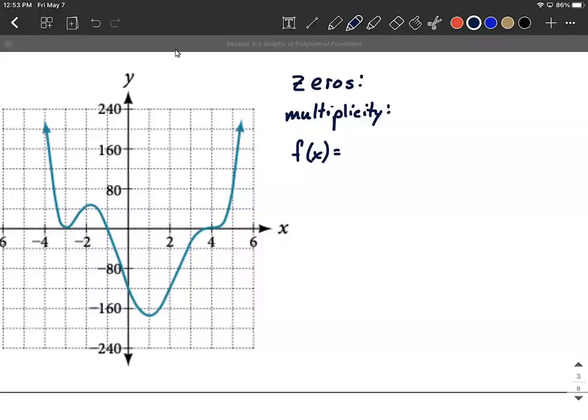Okay, we're given the graph of a polynomial function and our goal is to find what actual function produces this graph. So as we get going on this, what we want to pick out is first the zeros or x-intercepts or roots, then their multiplicities, and put that together as factors for our function.